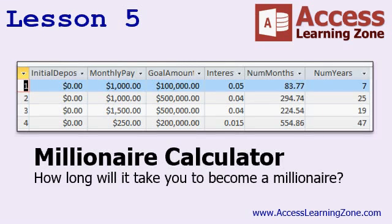Next, we'll build the millionaire calculator — one of my favorite things. You can use it to determine how long it's going to take you to become a millionaire, or to plan for retirement. For example, you can afford to put away $1,000 a month, your goal is $100,000, and you're getting 5% interest. Access will tell you it'll take about seven years to reach your goal.